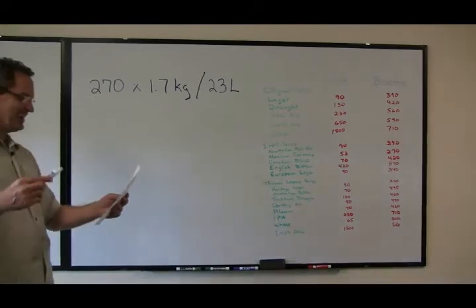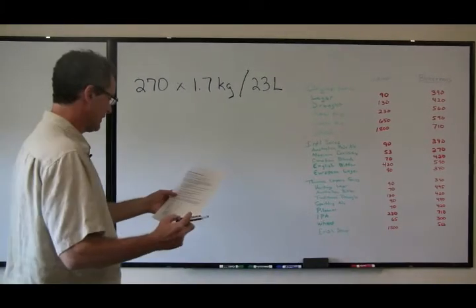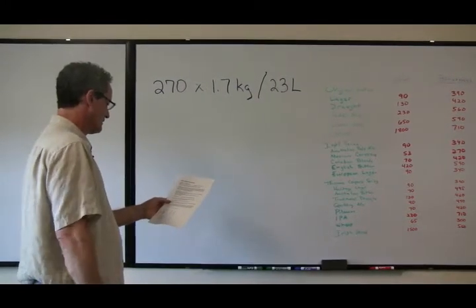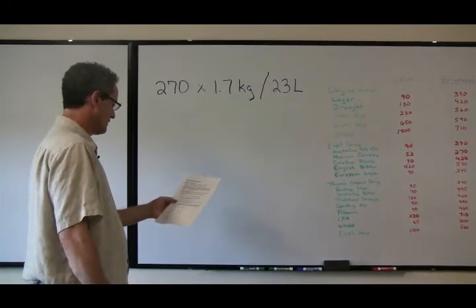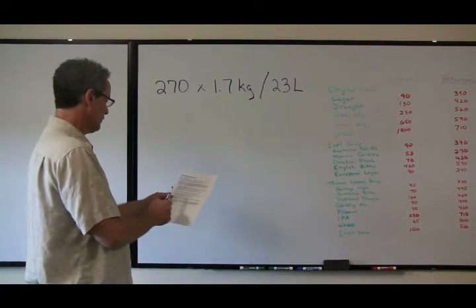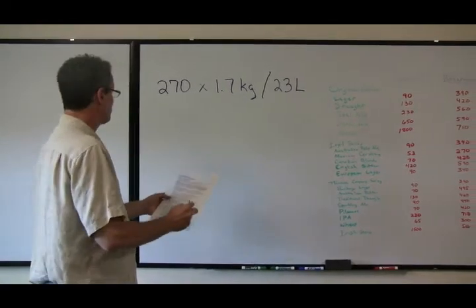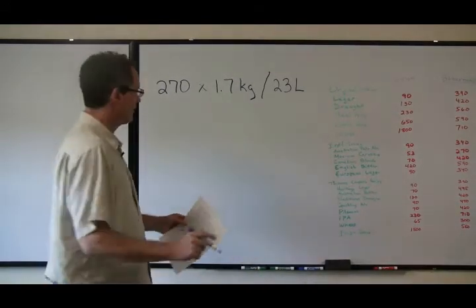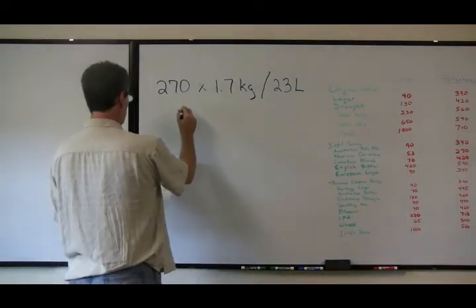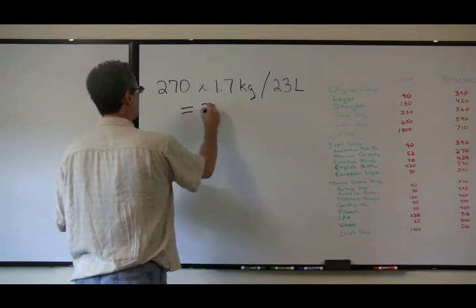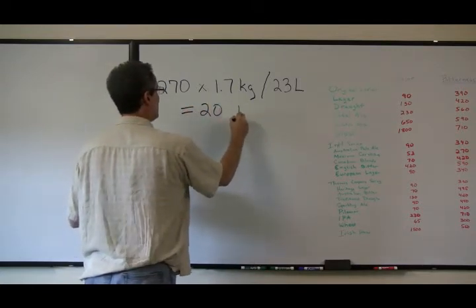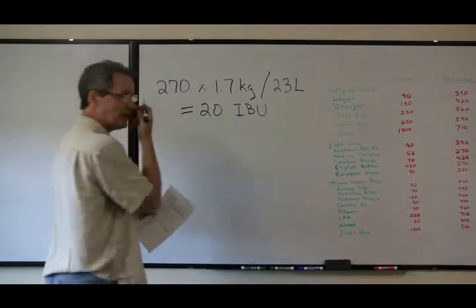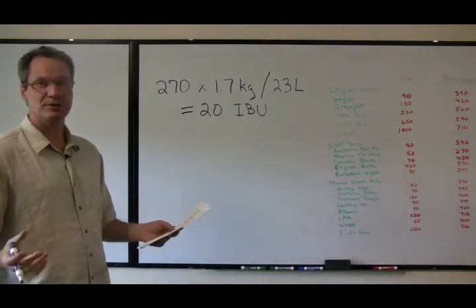So the product bitterness, 270 times 1.7 divided by 23, equals—if I have a calculator I could demonstrate it really quickly—but I have it written down here: equals 20 IBUs, which seems about right for a Mexican Cerveza.